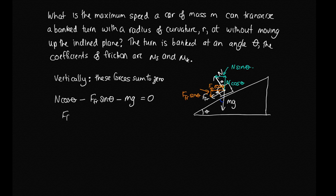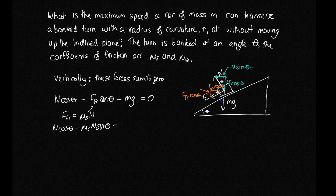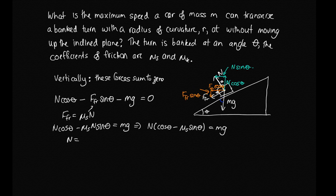Since the car's wheels are rolling, the frictional force equals mu_s times N. Substituting into the vertical equation: N·cos(theta) minus mu_s·N·sin(theta) equals mg. Pulling N out as a common factor gives N·(cos(theta) - mu_s·sin(theta)) = mg, so the normal force is N = mg / (cos(theta) - mu_s·sin(theta)).